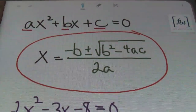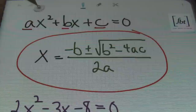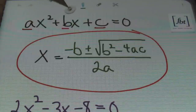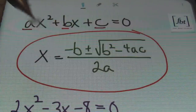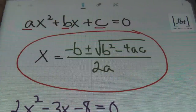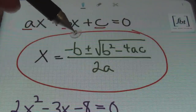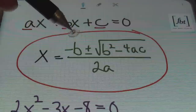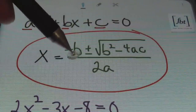Ladies and gentlemen, the quadratic formula. So anytime you have an equation of the form ax squared plus bx plus c equals to zero, then you can use what is called the quadratic formula — that's what's in this red circle right here. It reads x equals to negative b plus or minus the square root of b squared minus 4ac all over 2a.